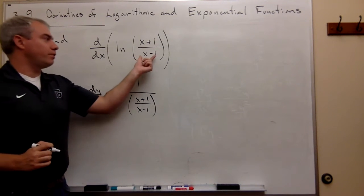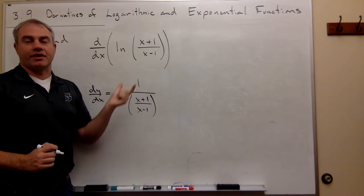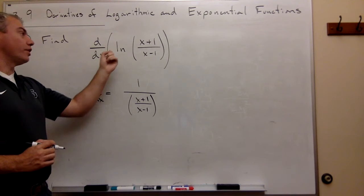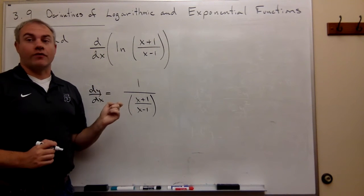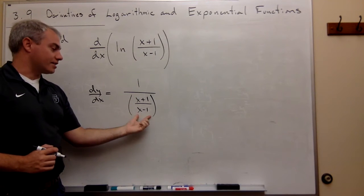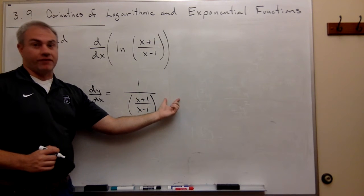But then we need to multiply it by the derivative of that thing. So we're using the chain rule here. We know that the derivative of ln of x is 1 over x, so the derivative of ln of something is 1 over that something times the derivative of that something.